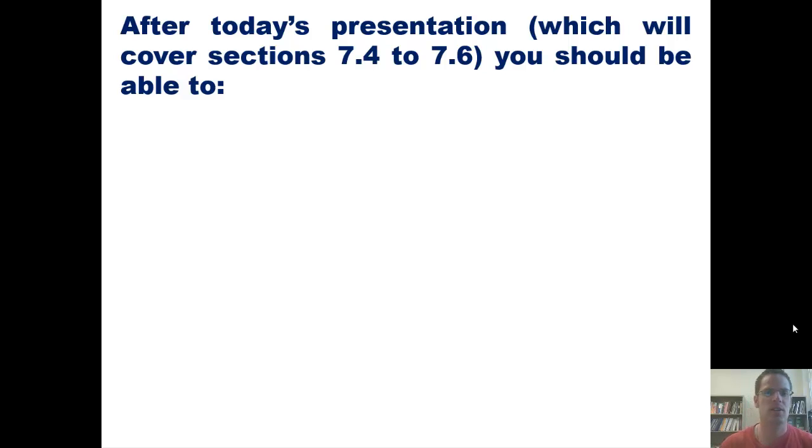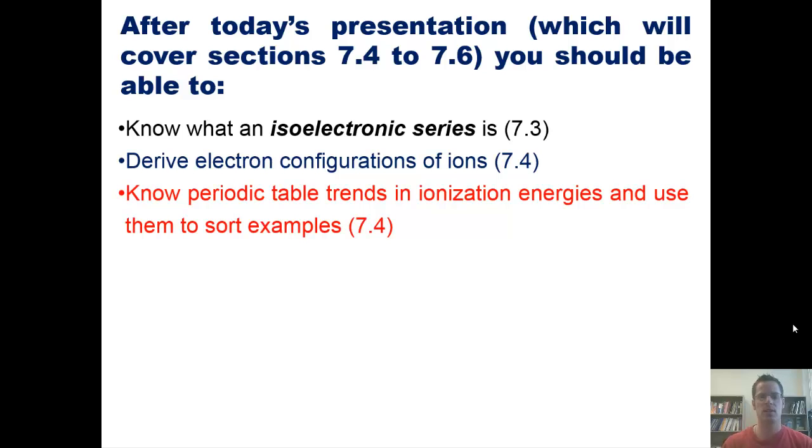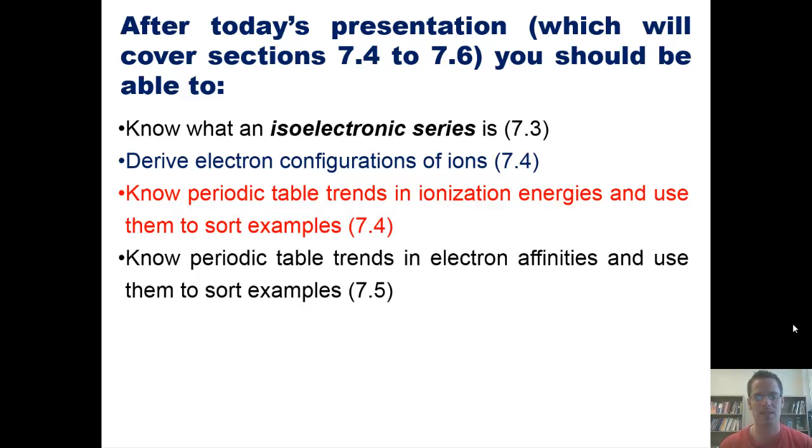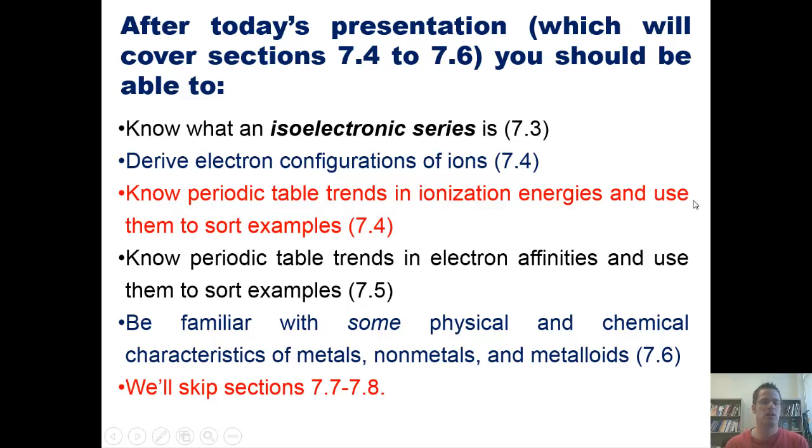After this last set of presentations, which will cover sections 7.4 to 7.6 of chapter seven and ultimately conclude our coverage of chapter seven, you should be able to: know what an isoelectronic series is, derive electron configurations of ions, know periodic table trends in ionization energies and use them to sort examples, know periodic table trends in electron affinities and use them to sort examples, and be familiar with some physical and chemical characteristics of metals, nonmetals, and metalloids. We will skip sections seven and eight of our text. In this video, I'll teach you the first three bullet points.